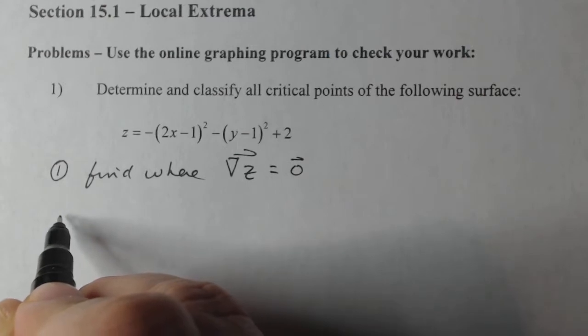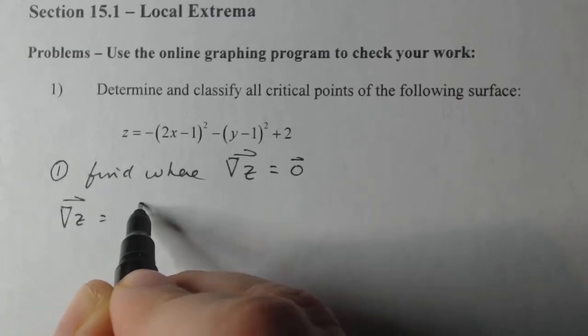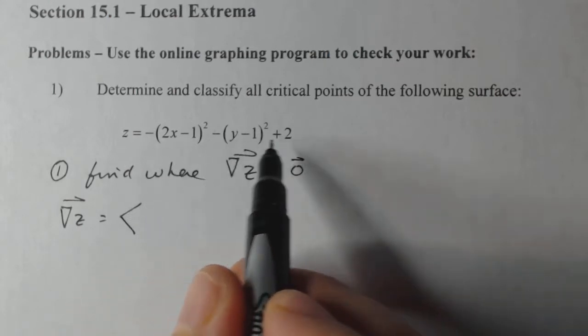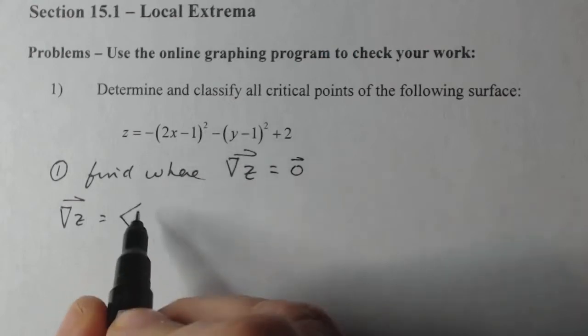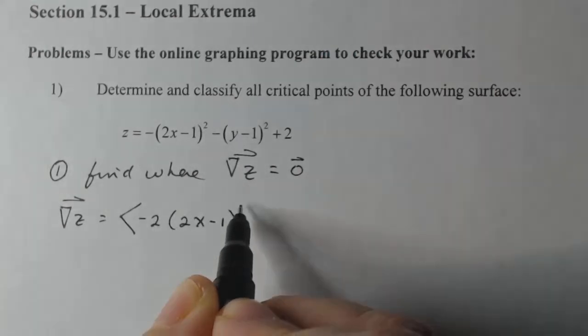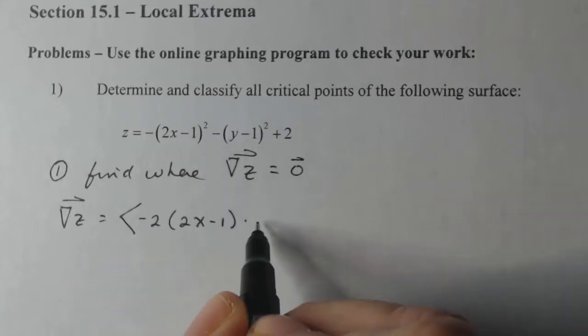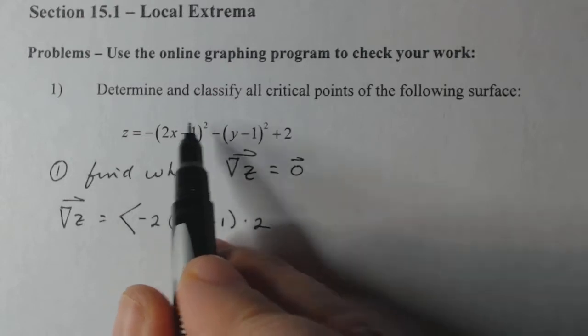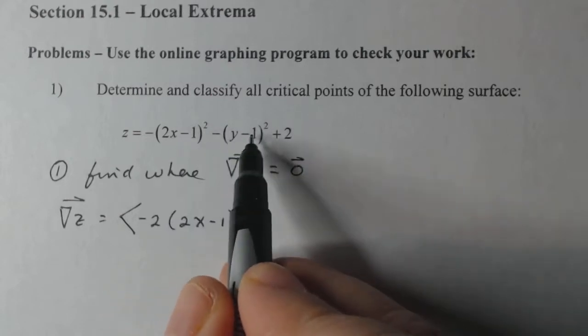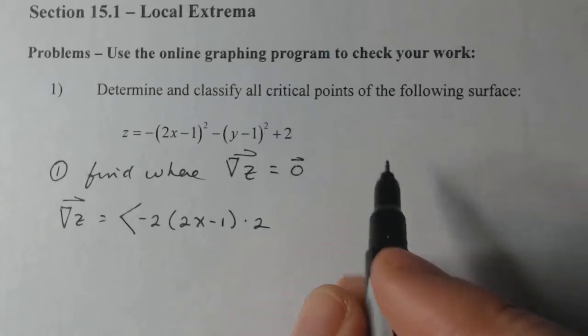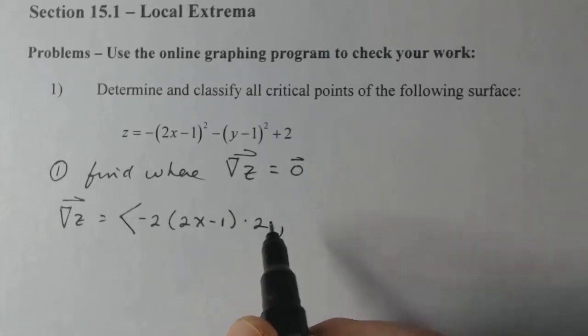So if I want to do that, that means I have to find the gradient of z. The first component here will be z sub x, so I have to take the derivative of this with respect to x. I have to bring down the two, keep the inside the same, multiply by the derivative of the inside with respect to x. That only has x's in it, so use the chain rule. This does not have x's in it, so the derivative of this will be zero, and the derivative of that will be zero. So that is z sub x.